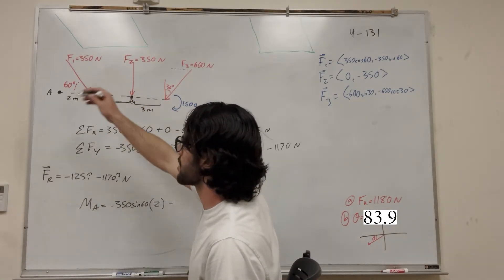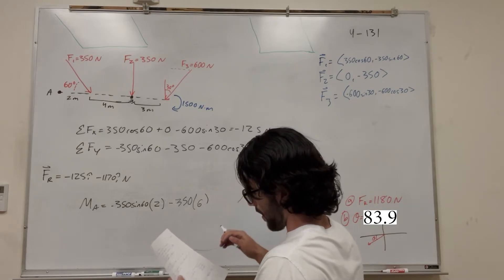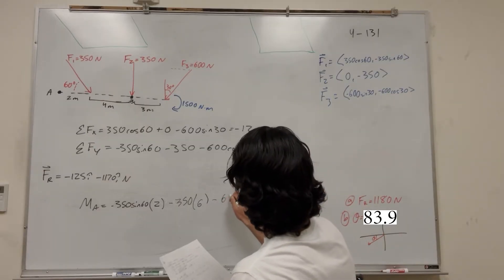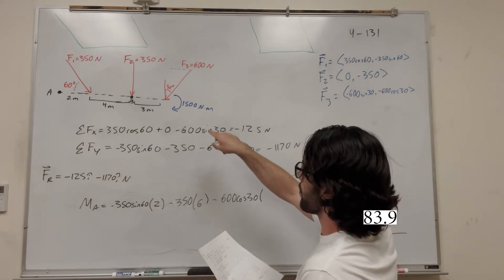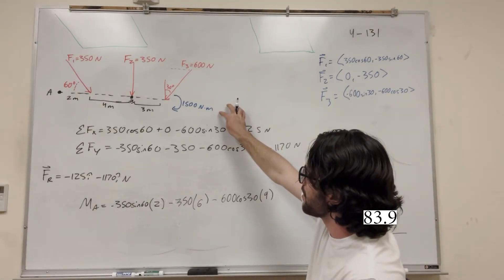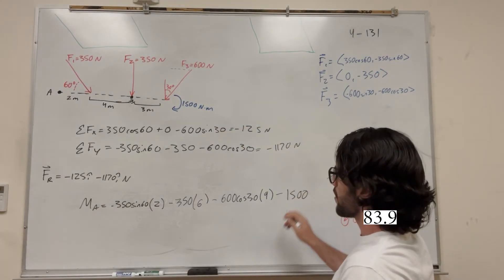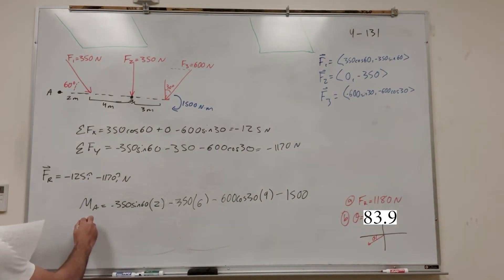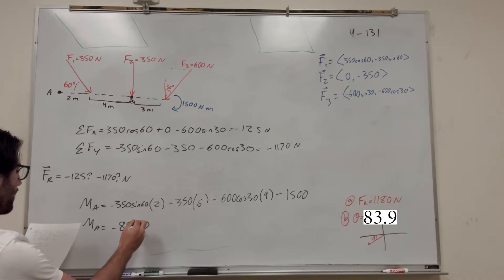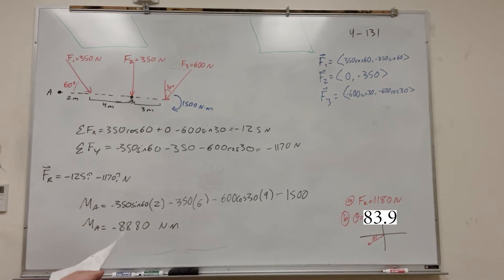Force 2 also causes clockwise rotation, so it's negative 350 times 6 meters (distance of 2 plus 4). Then Force 3: negative 600 sine(30) times 9 meters (2 plus 4 plus 3). We also subtract the given moment of 1500 newton-meters since it acts clockwise. Adding all of these up gives a moment of A equal to negative 8808 newton-meters.